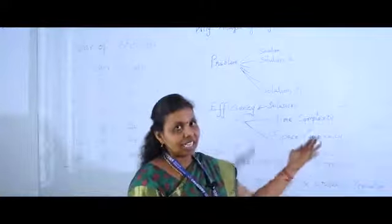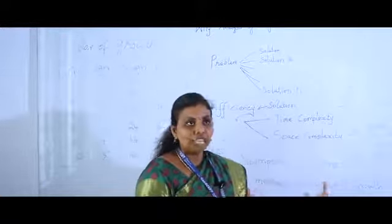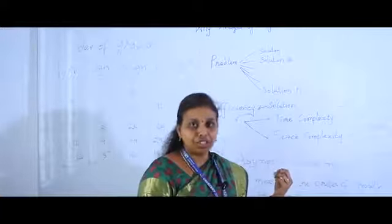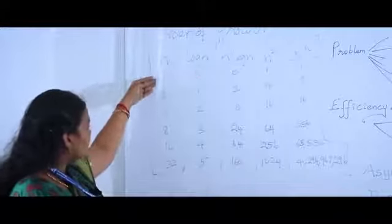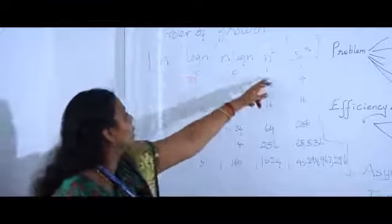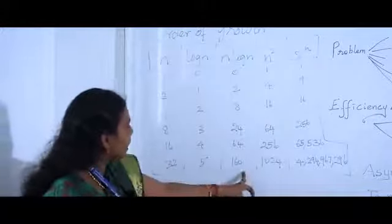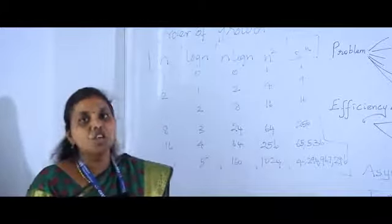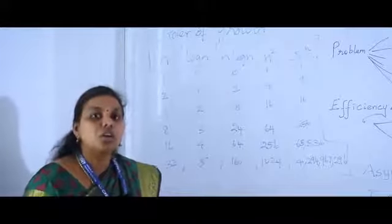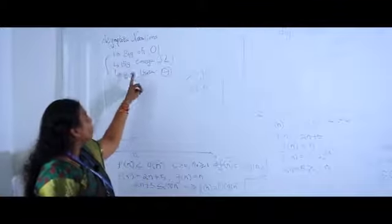We have seen examples for calculating time efficiency and space efficiency. Now, as the input size increases, the time taken for executing a particular algorithm increases. We are going to see the basic efficiency classes for asymptotic notations. As input size n increases, the runtime increases — for input size 32, the runtime has grown significantly. We measure the runtime in orders of growth. To measure the order of growth of an algorithm, we use asymptotic notations. There are three types: Big O, Big Omega, and Big Theta.